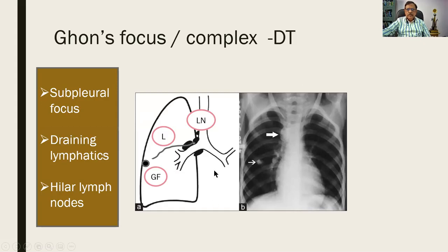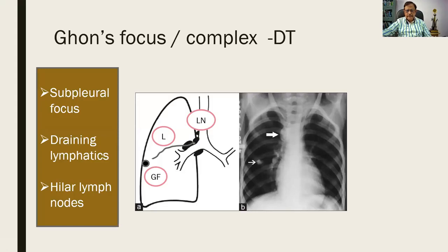Here is a line diagram you can easily draw. The Ghon's focus is a subpleural focus measuring about 0.5 to 1 centimeter in diameter, present in the upper part of the lower lobe or the lower part of the upper lobe. When something is inhaled it hits the subpleural region and stays there — that is how we get the Ghon's focus. Along with the draining lymphatics and the hilar lymph nodes, this constitutes the Ghon's complex or primary complex of the lung.